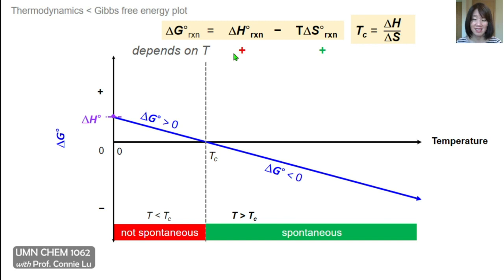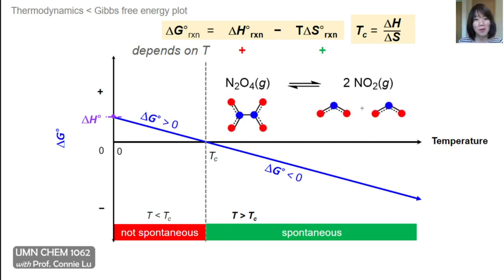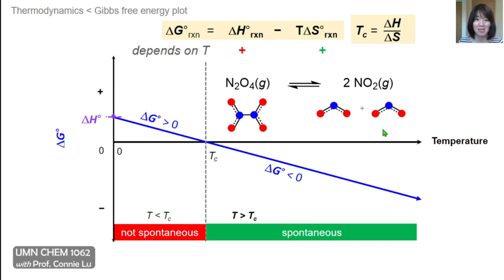An example of a chemical reaction fitting this behavior is N2O4 splitting into two molecules of NO2. Here, enthalpy favors the reactant side, but entropy favors the product side because there are more moles of gas on the right. At low temperatures, where the enthalpy term is dominant in the delta G equation, N2O4 is favored and this reaction as written is not spontaneous. However, if we raise the temperature above the crossover temperature, the entropy term dominates. Because entropy favors the product side, this reaction does become spontaneous at higher temperatures.